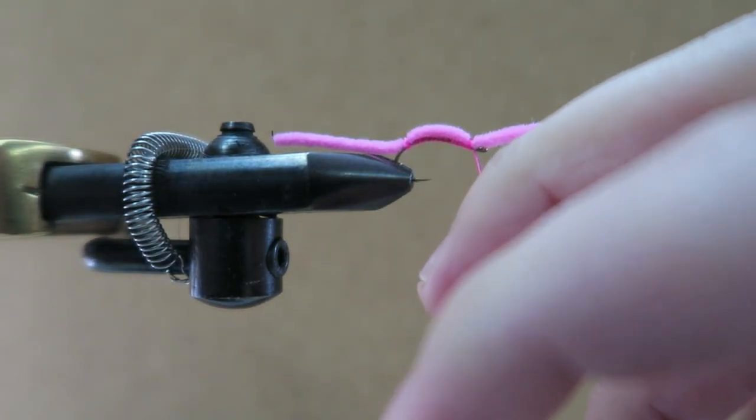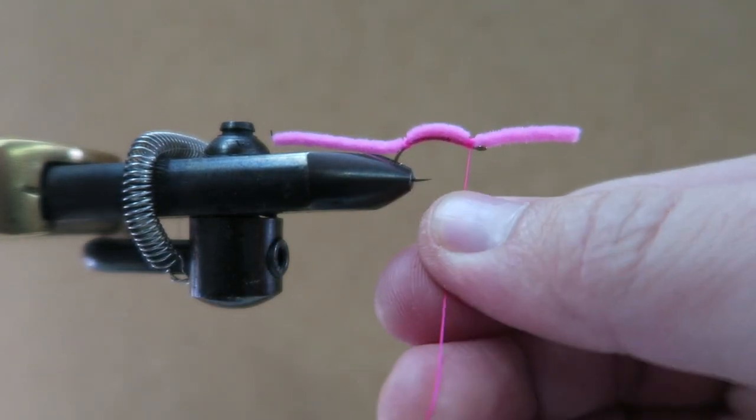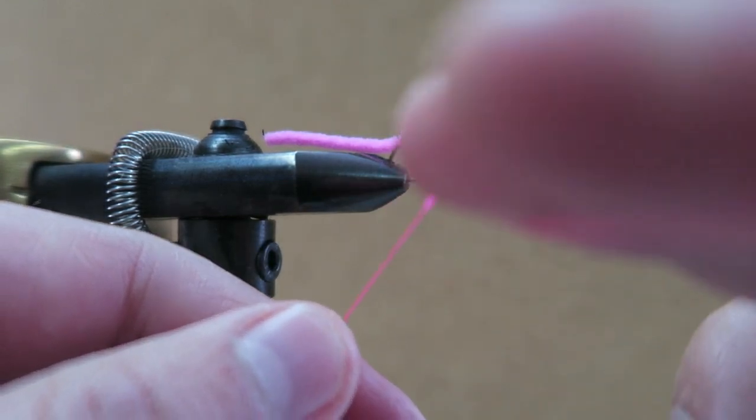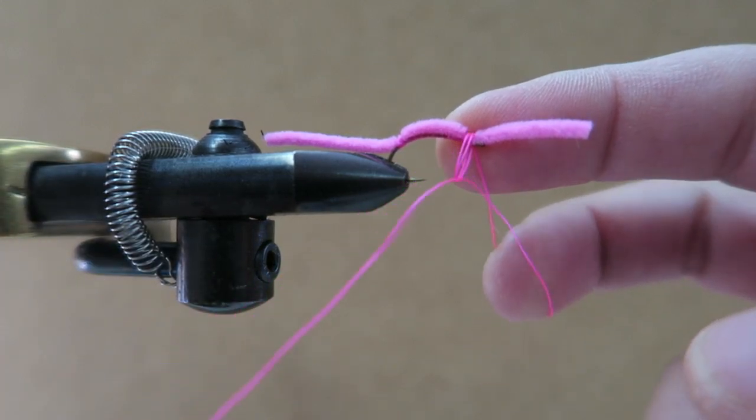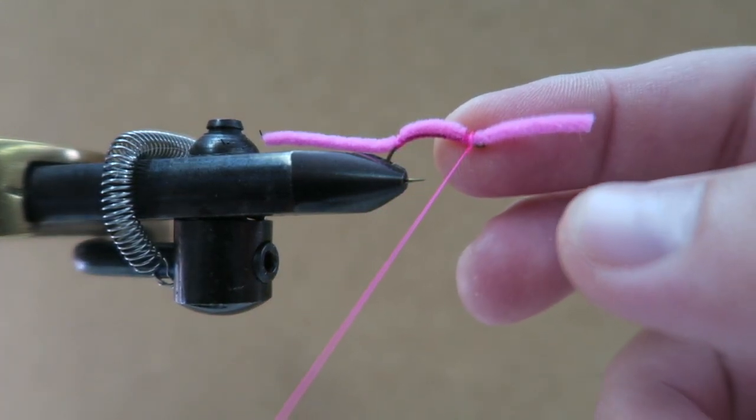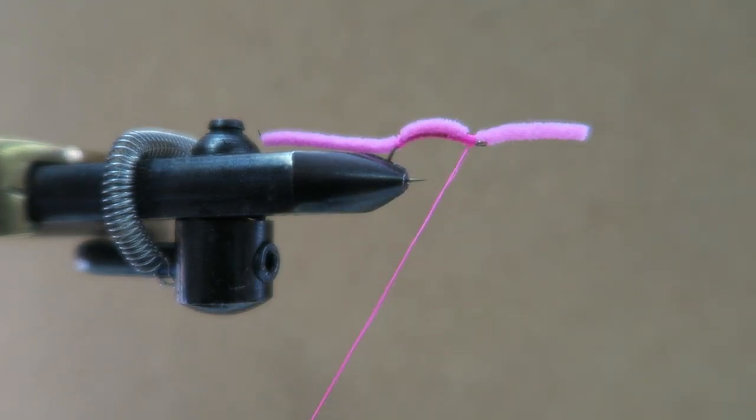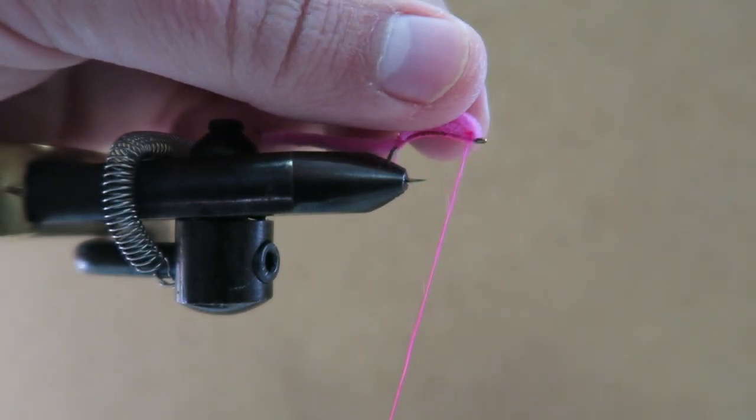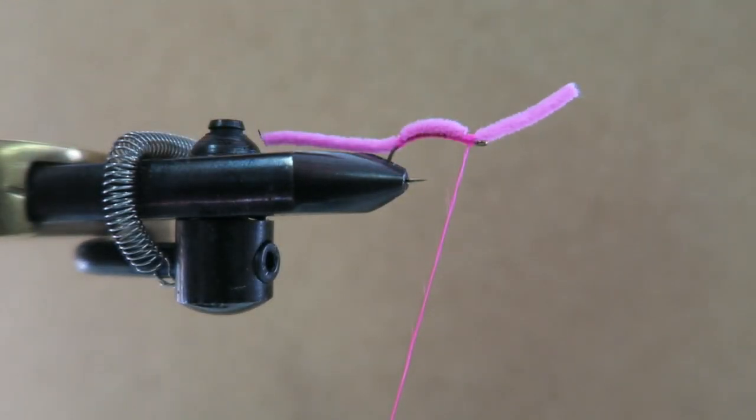I gave it a few good wraps right there. And you just tie it right off like that. That's all there is to it. You got a little bit of room there, still got enough room to tie it on.